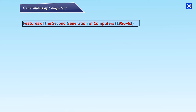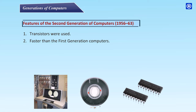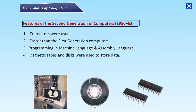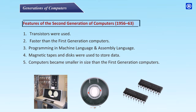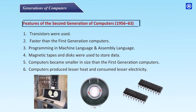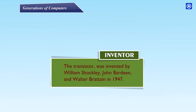Features of the Second Generation of Computers (1956–1963): Transistors were used, making them faster than first generation computers; programming in machine language and assembly language; magnetic tapes and disks were used to store data; computers became smaller in size; computers produced lesser heat and consumed lesser electricity. The transistor was invented by William Shockley, John Bardeen, and Walter Brattain in 1947.